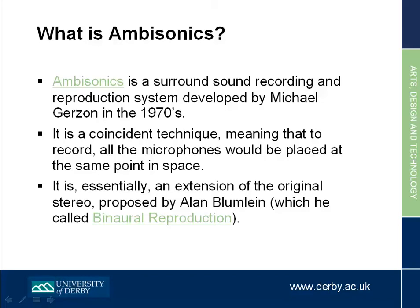So what is ambisonics? It's a system that was developed — or started to be developed — in the 1970s by a guy called Michael Gerzon. There were others working on similar techniques at the same time, both in the US and over here. But in a nutshell, it's a system based on a coincident micing technique, meaning that if we wanted to record something for ambisonics, we'd make sure all the microphone capsules are in exactly the same place — the same point in space — which is essentially an extension of the original stereo proposed by Alan Blumlein.